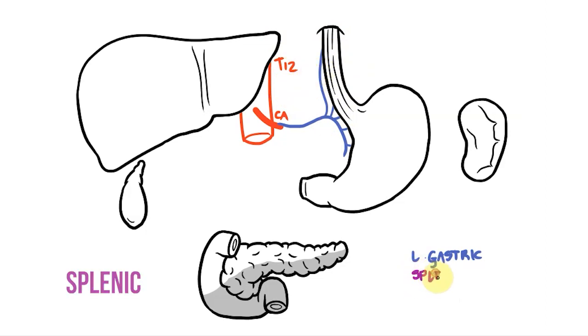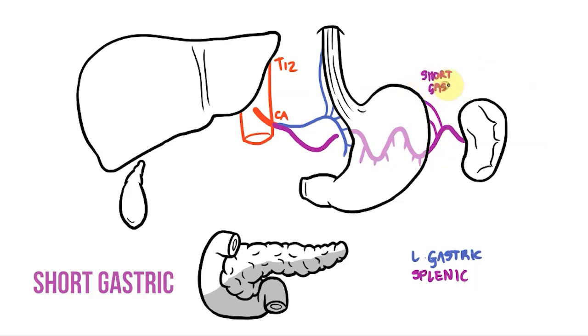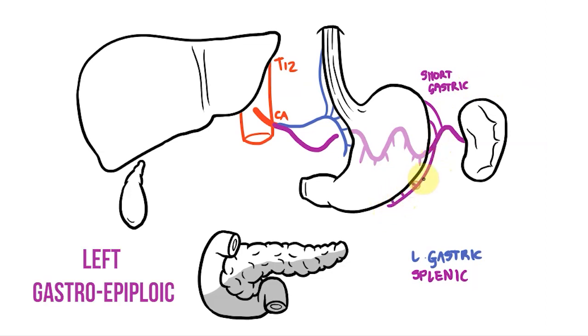Next we have the splenic artery. This is a large prominent artery that takes a tortuous route towards the hilum of the spleen. As it does so, it sends numerous small branches that supply the tail of the pancreas. It also sends branches to the stomach. Some of these are small branches that pass to the rounded fundus, and these short branches to the stomach are known as the short gastric vessels. We also have an artery that runs along the greater curvature of the stomach. This is the left gastroepiploic, or gastroemental artery.